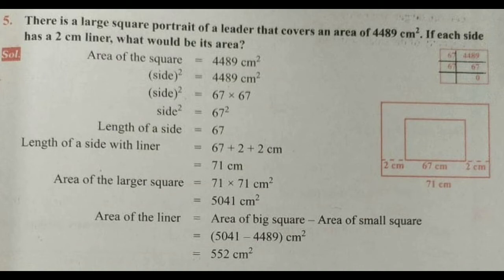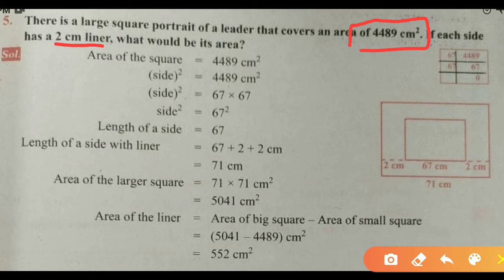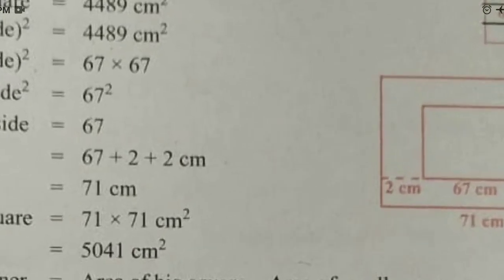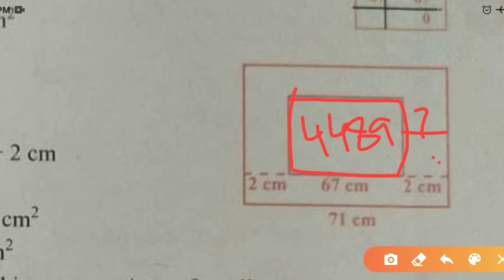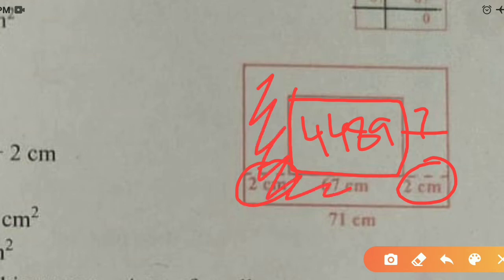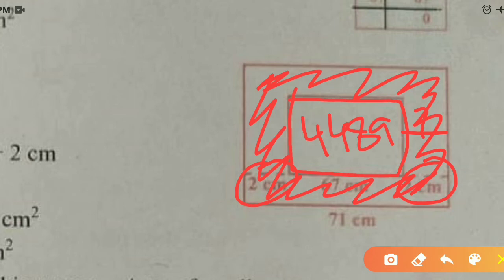The fifth question: there is a large square portrait of a leader that covers an area of 4,489 centimeter square. If each side has a 2 centimeter liner, what would be its area? The square portrait area is 4,489 cm². The liner space is 2 centimeters on each side. They are asking for the area of the liner space.